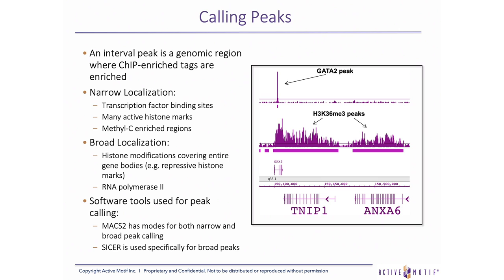The third step of our ChIP-seq pipeline is peak calling. An interval peak is a genomic region where ChIP-enriched tags are found around the site where the protein of interest is bound. There are two general types of peaks and peak-calling algorithms: narrow and broad. Transcription factor binding sites, as well as many active histone marks and methyl-C-enriched regions, are examples of narrow peaks. Histone modifications covering entire gene bodies, such as repressive histone marks and RNA polymerase 2, are examples of broad peaks. The MACS2 software has modes for both narrow and broad peak calling; another package, SICER, is used specifically for broad peaks.